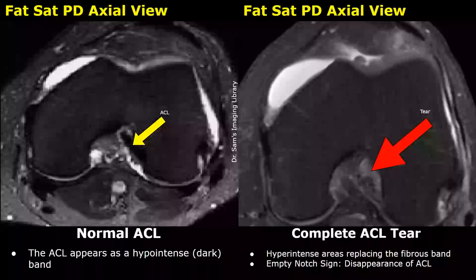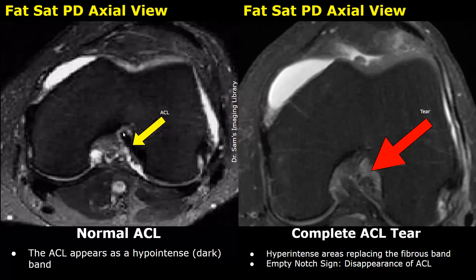These are axial images of the knee. In the image on the left, we can see the normal ACL — this hypointense fibrous band is the ACL. In the image on the right, we have a complete ACL tear. We find hyperintense areas instead of the fibrous ACL band. This type of appearance — the empty notch sign — can also be seen in axial views.